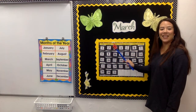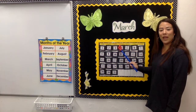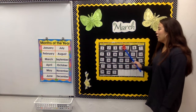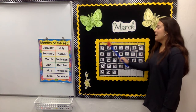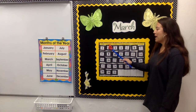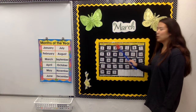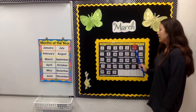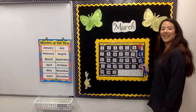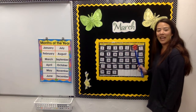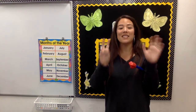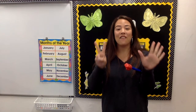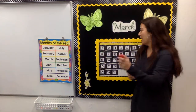Sunday, Monday, Tuesday, Wednesday, Thursday, Friday, Saturday. There are seven days, there are seven days, there are seven days in a week. Sunday, Monday, Tuesday, Wednesday, Thursday, Friday, Saturday.